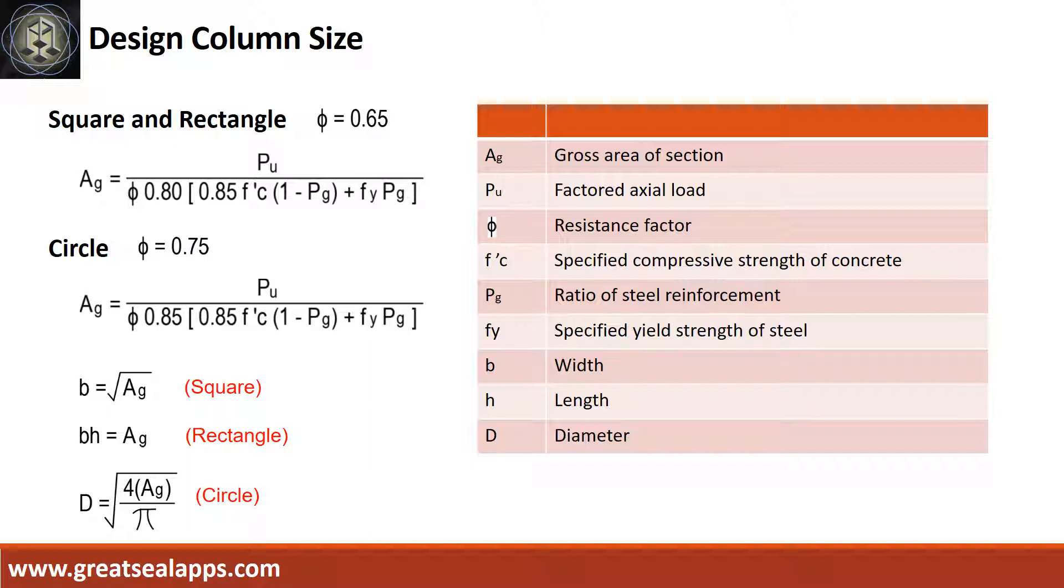Solve the gross area of section from the given factored load and design criteria for square, rectangular, or circular column. From the gross section area, derive side for square column, length and width for rectangular column, and diameter for circular column.